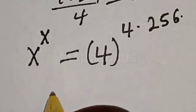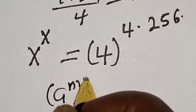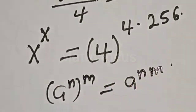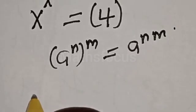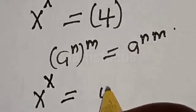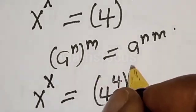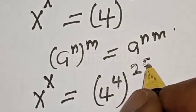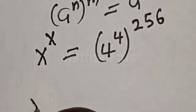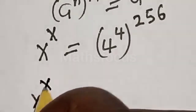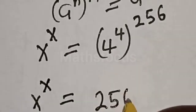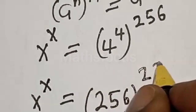Remember this rule: if you have A raised to power N raised to power M, it is equal to A raised to power N times M. Then, S raised to power S is equal to 4 raised to power 4 raised to power 256.